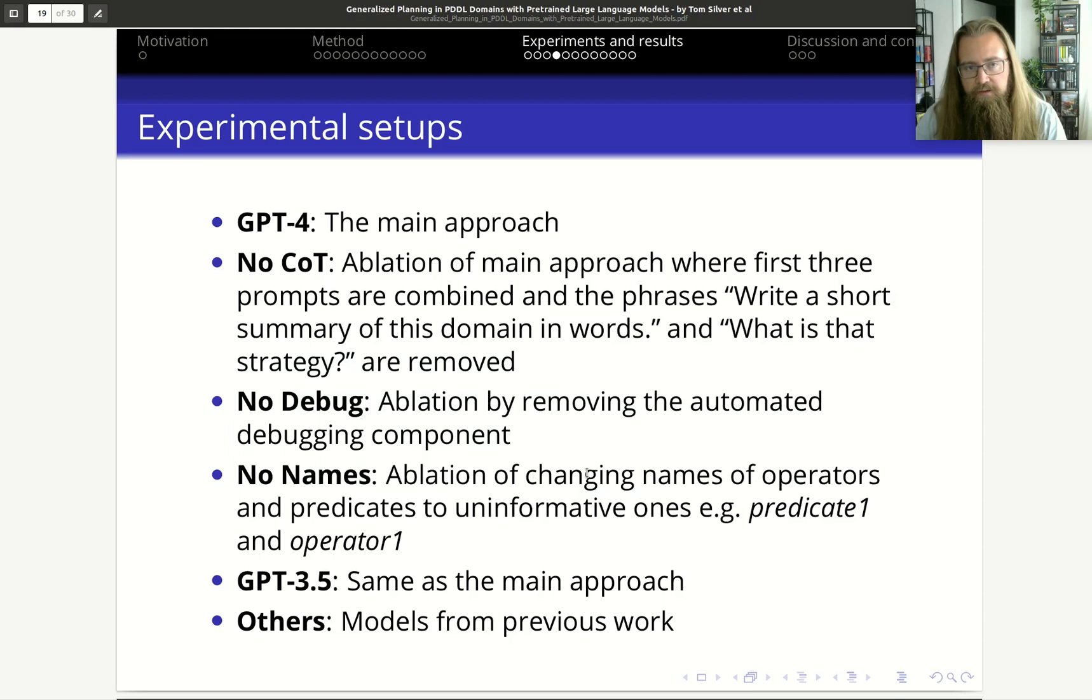They use several different experimental setups. The main approach is to use GPT-4, and then they do some ablations. They remove the chain of thought here, and they just remove these steps like "write a short summary" and "what is the strategy." They also try to remove the debugging component, and they also do this "no names" ablation where they just change the predicates and the operator names to just random stuff. They also check if GPT-3.5 is good, and then there's also some other models from previous work.